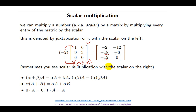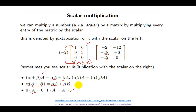In the very next session we will also learn matrix-to-matrix multiplication and cross product. Regarding scalar multiplication properties: if we have two scalar quantities alpha and beta multiplied by matrix A, it equals alpha times A plus beta times A. Similarly, if we add two matrices A and B and multiply by scalar alpha, it equals alpha times A plus alpha times B. Multiplying any matrix by 0 gives the zero matrix, and multiplying by 1 gives the same matrix. So in this session we have learned matrix addition, subtraction, and scalar multiplication.